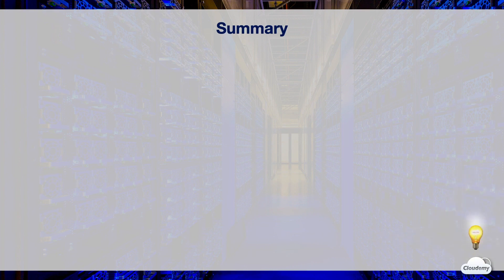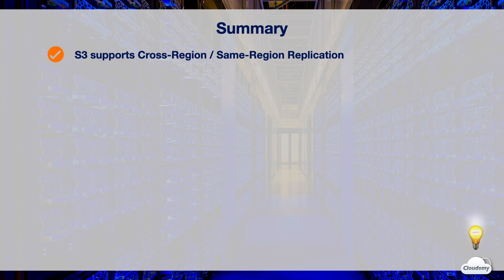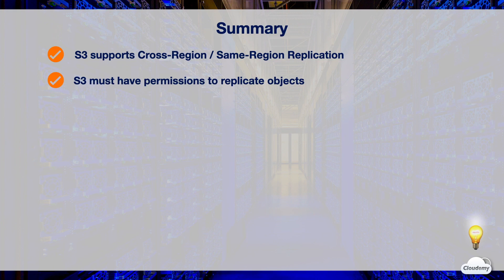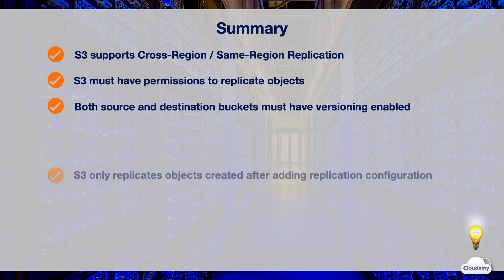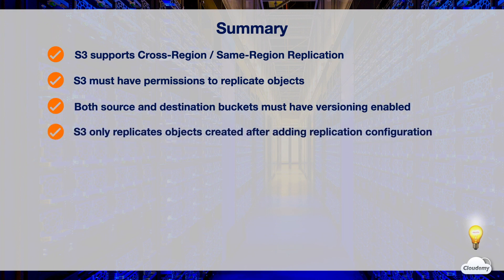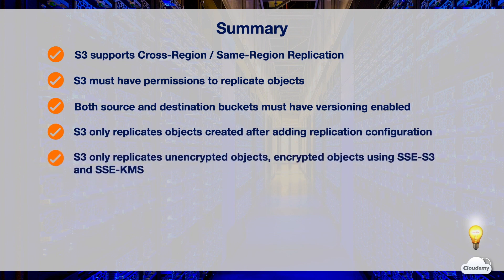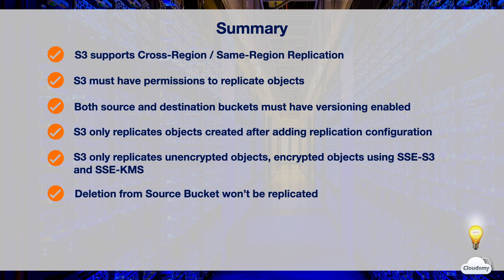In this episode, we've learned how S3 replication works. S3 supports both cross-region replication and same-region replication. For replication to work, S3 must have permissions to replicate objects, and replication only works on versioning-enabled source and destination buckets. S3 only replicates objects created after adding the replication configuration, only replicates unencrypted objects and objects encrypted using SSE-S3 and SSE-KMS, and objects deleted in the source bucket won't be replicated to the destination bucket. That's all for S3 replication — thanks for watching and see you in the next episode.